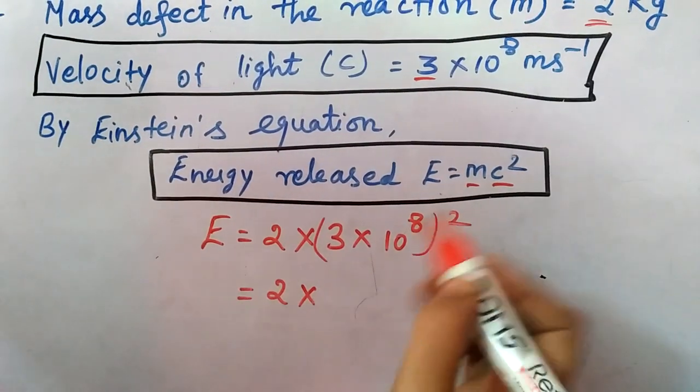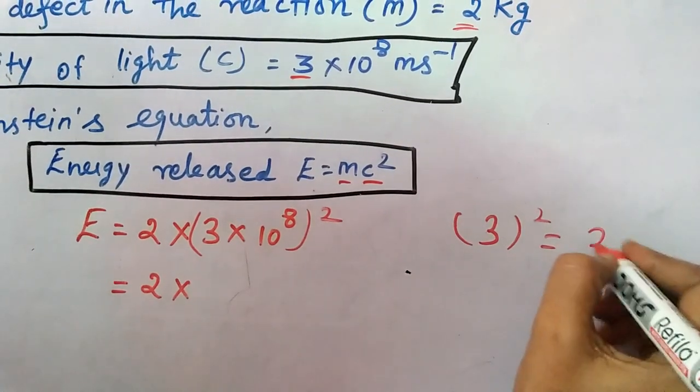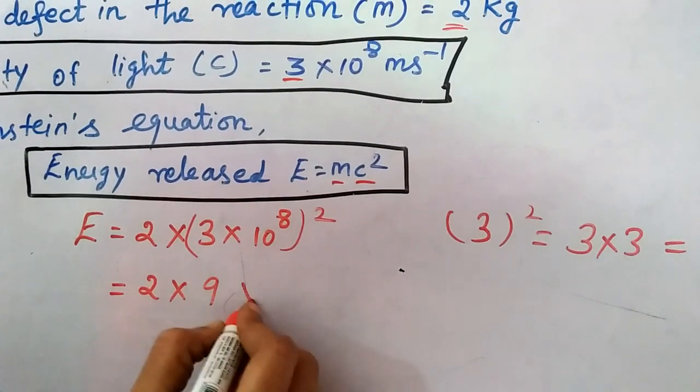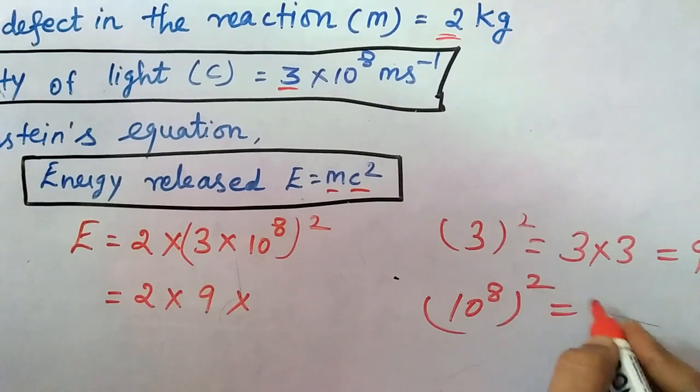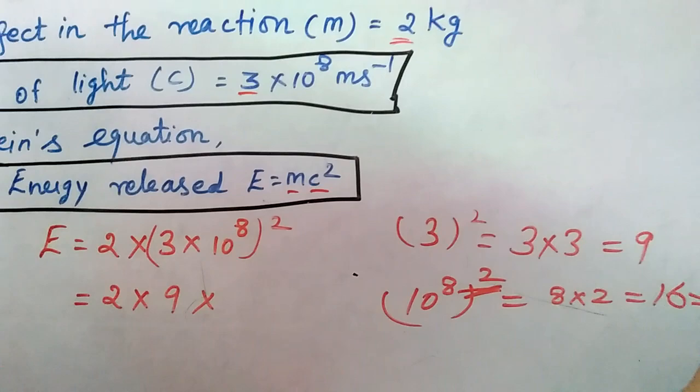Then next 2 into 3 squared. 3 squared means what? 3 into 3 equals 9. So 2 times 9 into 10 power 8 into 2. 8 twos are 16, so 10 power 16.